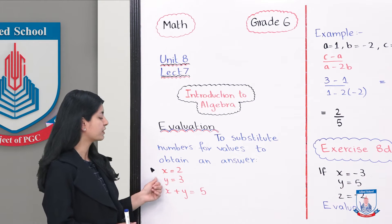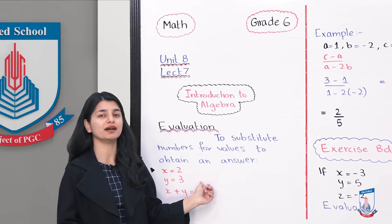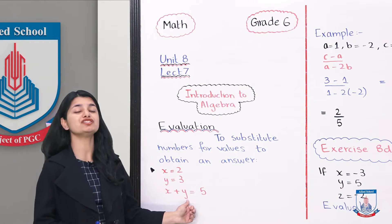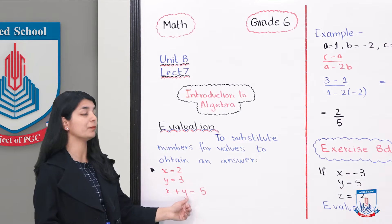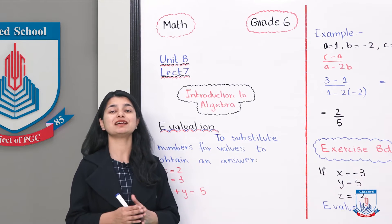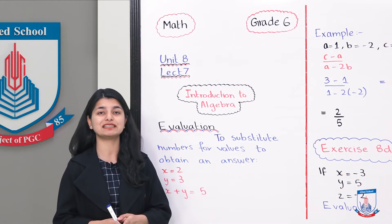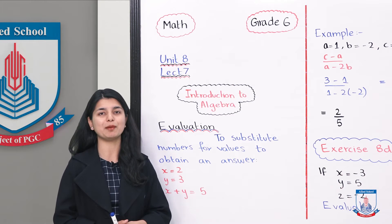For example, if x equals 2 and y equals 3, then x plus y is basically 2 plus 3, which is 5. So this is what evaluation is basically like. Let's do another example.